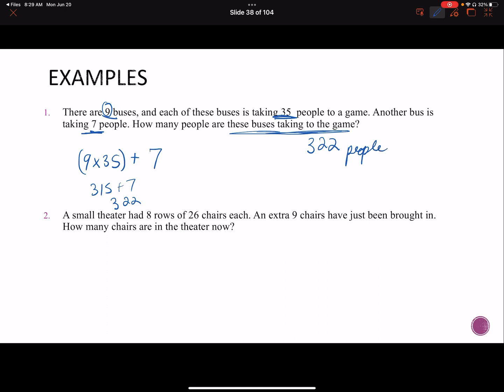Next, a small theater has eight rows with 26 chairs each. And nine extra chairs have been brought in to make room. Hopefully a sold out show. How many chairs are in the theater now? So I have eight rows of 26. So that's like eight times 26 for how many people are in those rows. And then I have nine that I have to add to it.